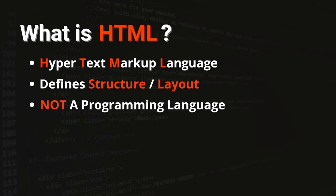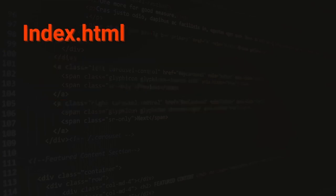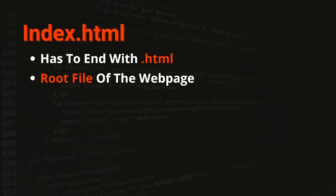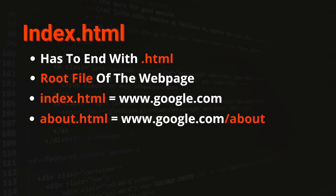Now that we know what HTML is, let's create our first HTML file. The first HTML file we are going to create is going to be named index.html. You're going to create a lot of index.html files during your web dev journey. The HTML files have to end with .html — that's a must. The index.html is actually the root file of the webpage. So when you go to google.com, it's actually an index.html. For example, about.html is going to be equal to google.com/about.